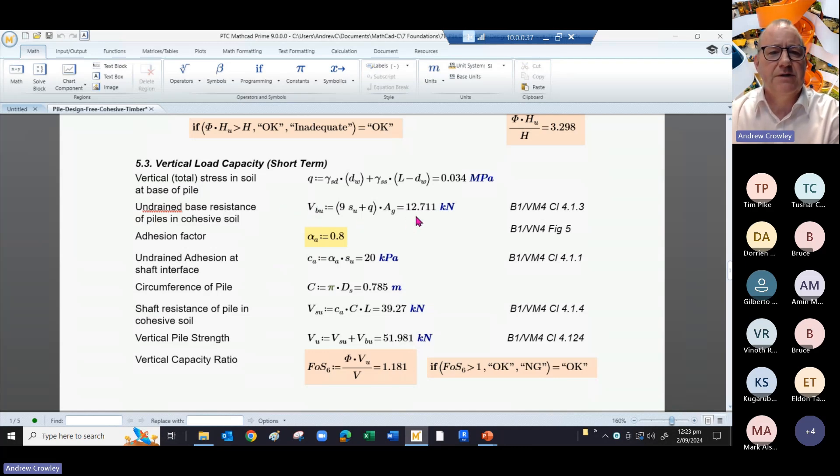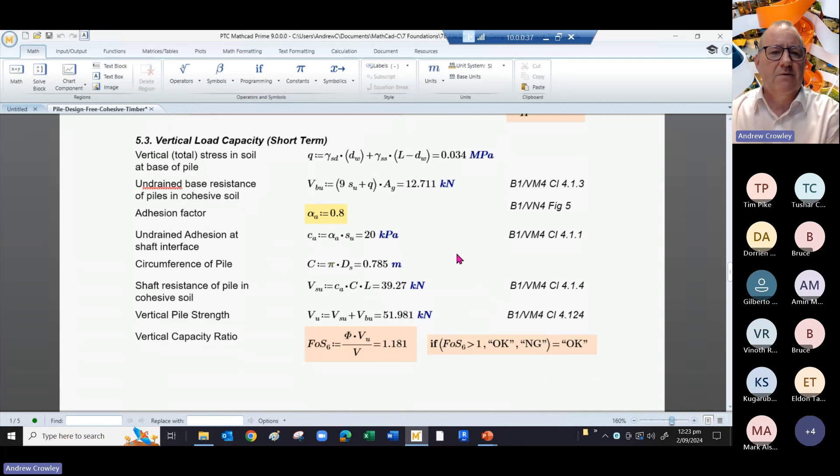You might want to take some shaft resistance, so the undrained adhesion of the shaft interface is worked out from the adhesion factor multiplied by the undrained shear strength, giving 20 kPa.